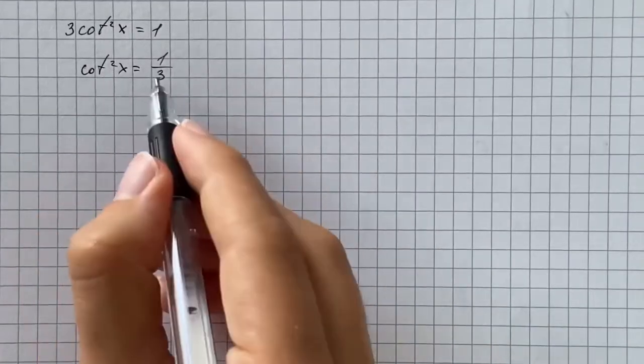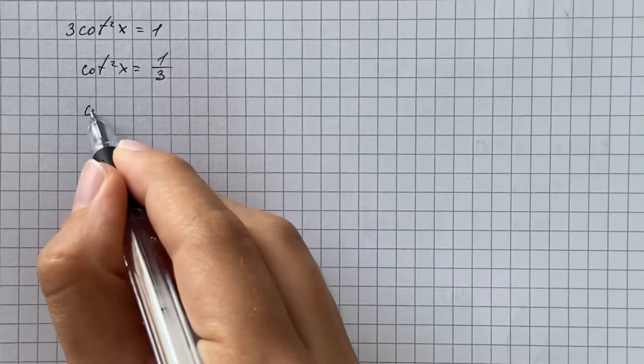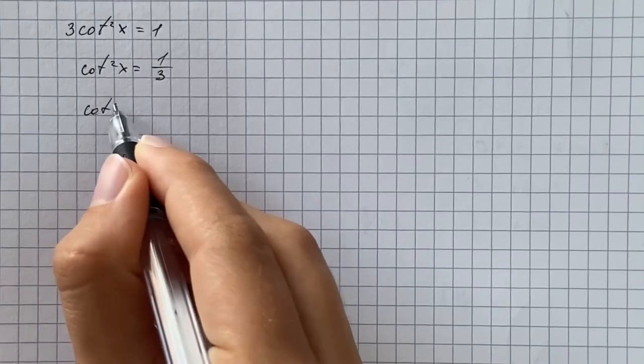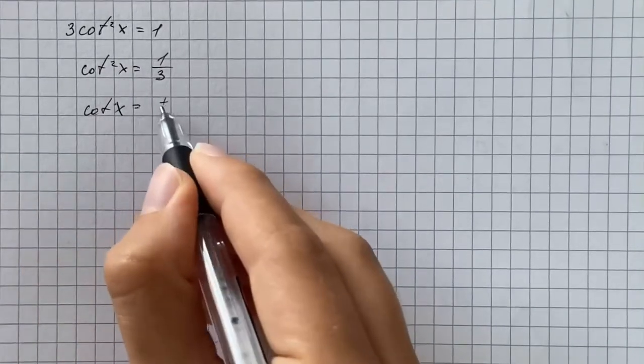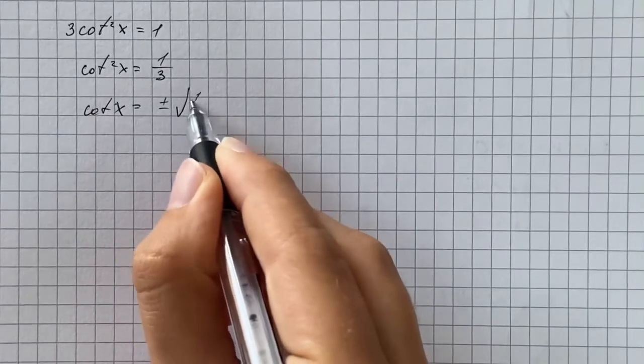Then we're going to take root on both sides, that gives us cotangent of x equals positive or negative square root of 1 third.